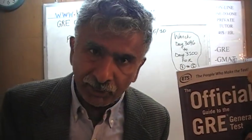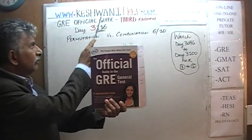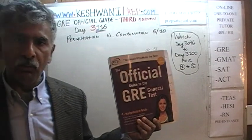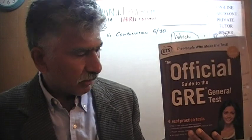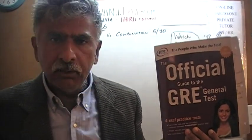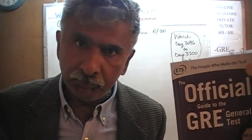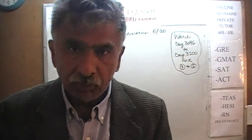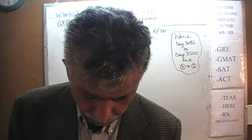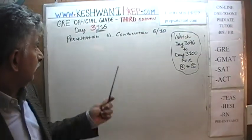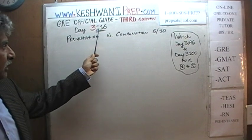Hello, my name is Keshwani. We are here because we want to prepare for the GRE. We have been solving math problems out of this book, the official guide to the GRE, third edition. If you do not own this book already, purchase one immediately. Today is our lesson number 116, day 3116. Three is to signify the fact that we are in the third edition.